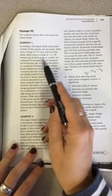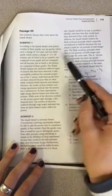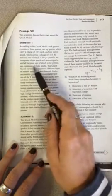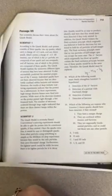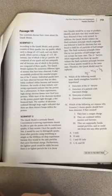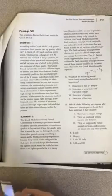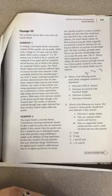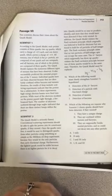All mesons, one of which is the P-plus particle, are composed of one quark and one antiquark. And all baryons, one of which is the proton, are composed of three quarks. The quark model explains the numerous different types of mesons that have been observed. It also successfully predicted the essential properties of the Y meson. Individual quarks have not been observed because they are